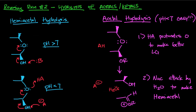To get the aldehyde formation from there, all you have to do is grab this H, the resulting negative oxygen pushes the electrons down, and you restore your aldehyde. So hemiacetal hydrolysis occurs at pH greater than 7 and pH less than 7 — essentially this functional group inside a drug can hydrolyze at basic pH and at acidic pH.